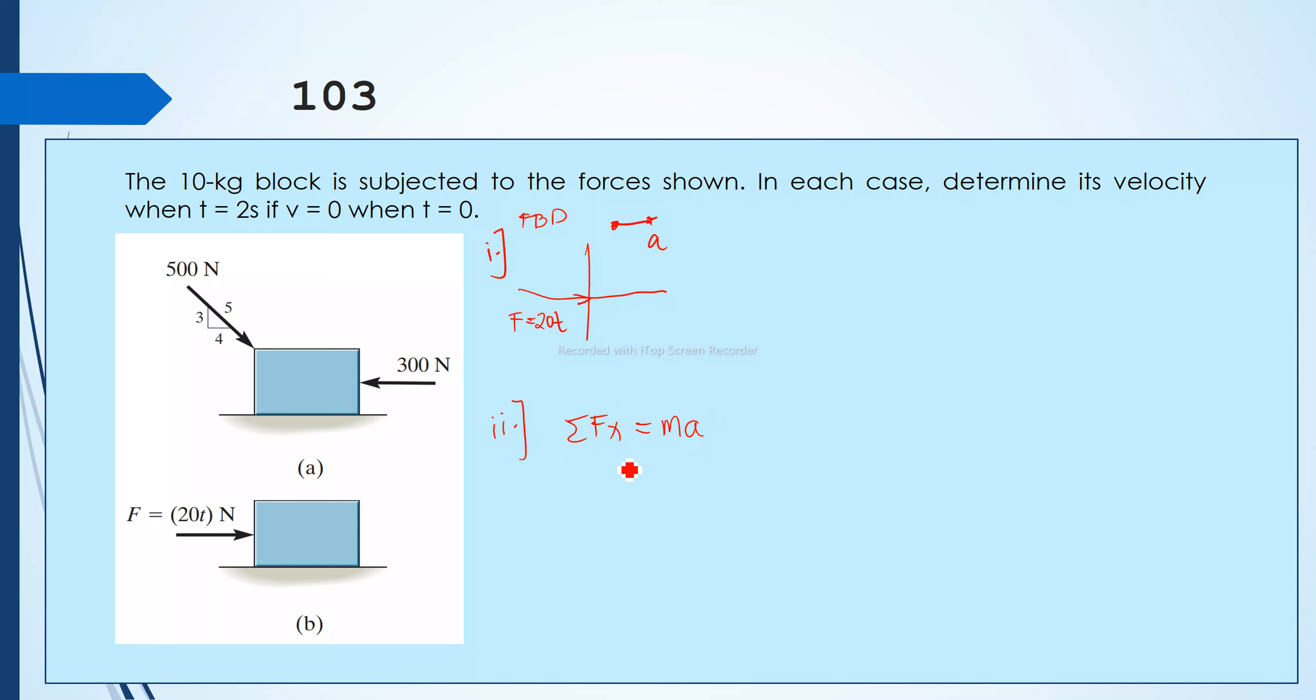I'll just put a, not a sub x, because there is only one acceleration. There is no two acceleration with this one, we are safe. So summation of forces along x, that is just equal to 20T, is equal to the mass which is 10 kilograms times acceleration. And we'll have the acceleration is equal to 2T.